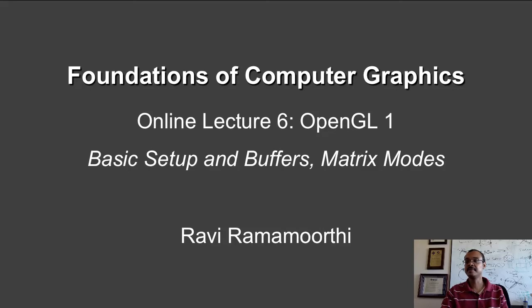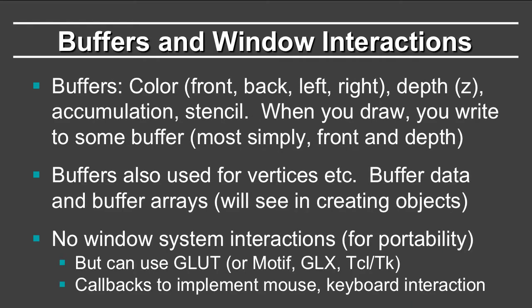We are going to consider basic setup, buffers, and matrix modes. There are several buffers in OpenGL: the front buffer into which you can draw, the back buffer into which you often draw so that you can have a complete drawing before swapping into the front buffer, left and right buffers used for stereo in virtual reality contexts, as well as the depth or Z buffer. We also have other buffers such as the accumulation buffer and the stencil buffer.